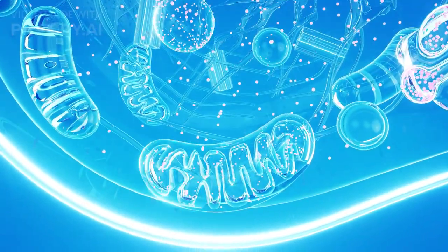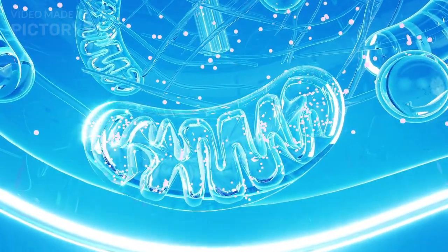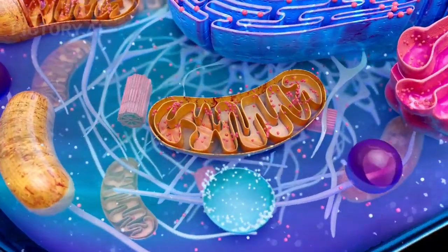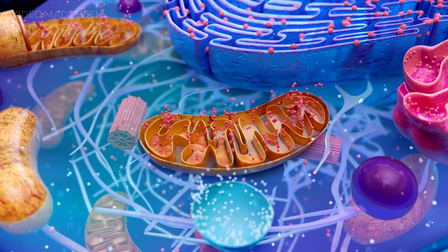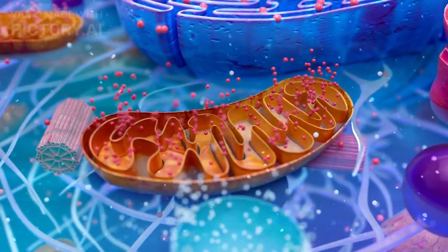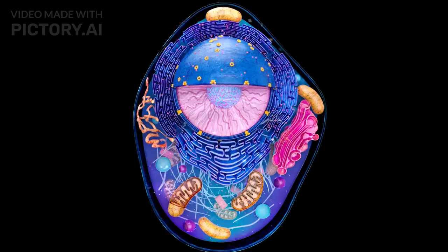Let's take a closer look at how it generates ATP, the energy currency of the cell. The mitochondrion has a double membrane structure. The outer membrane is smooth, while the inner membrane is folded into structures known as cristae. These folds increase the surface area for energy production.